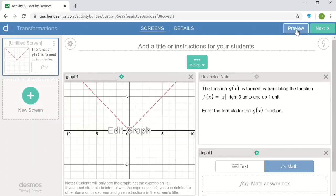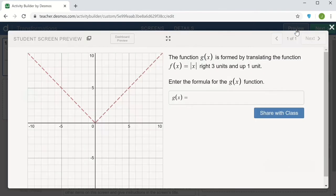So let me go to the preview now and take a look. So if I enter the formula absolute value of x minus 3, I can see there's a little x up here. Because that's not quite the right thing. If I add a plus 1, that x becomes a check mark. And that's something that the teacher will see on the dashboard. It's not something that the student will see.